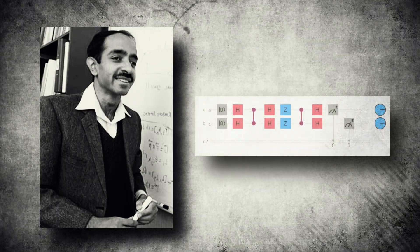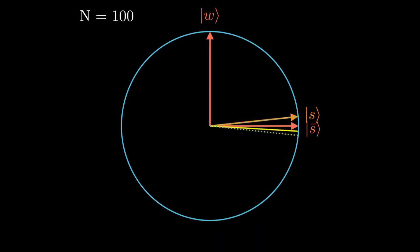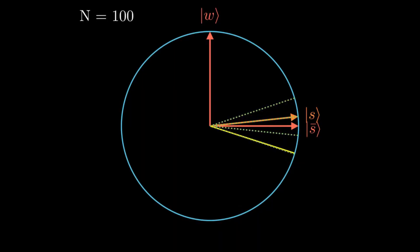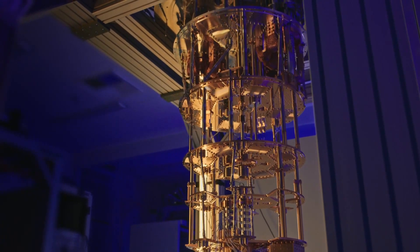Around the same time, Lov Grover from Bell Labs devised another quantum algorithm, known as Grover's Algorithm, which could search an unsorted database faster than any classical equivalent. Schor and Grover's algorithms became, and still are, the poster children for the power of quantum computing.